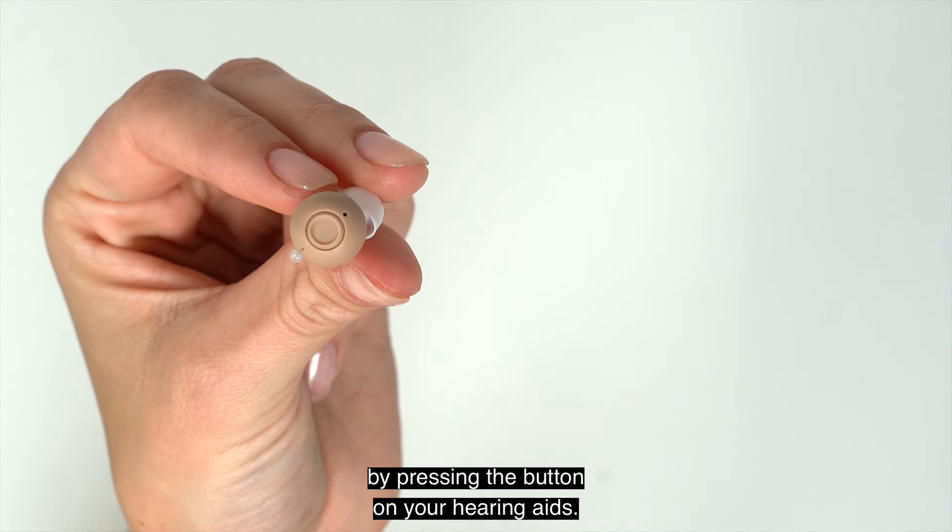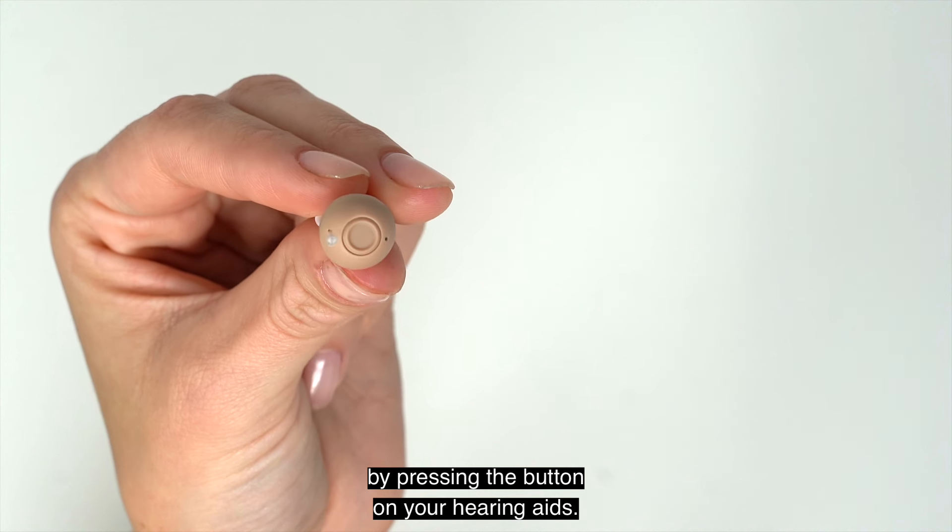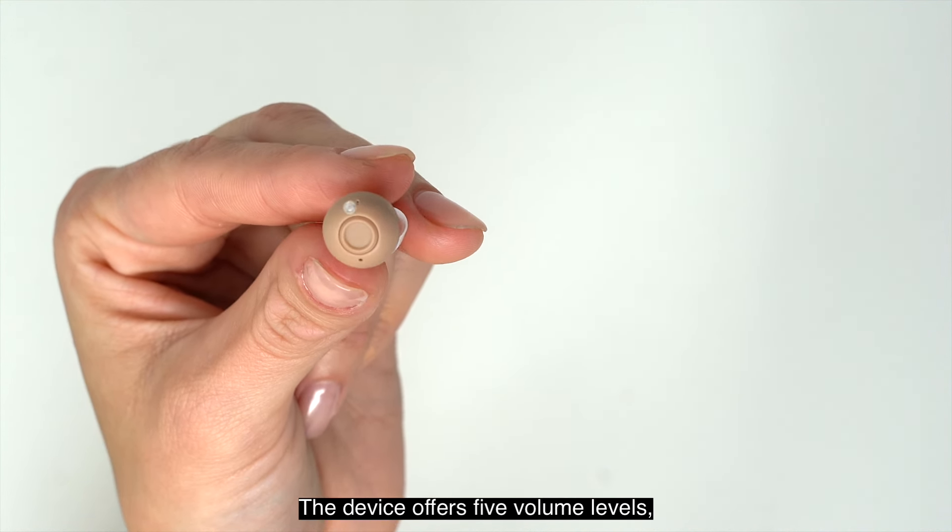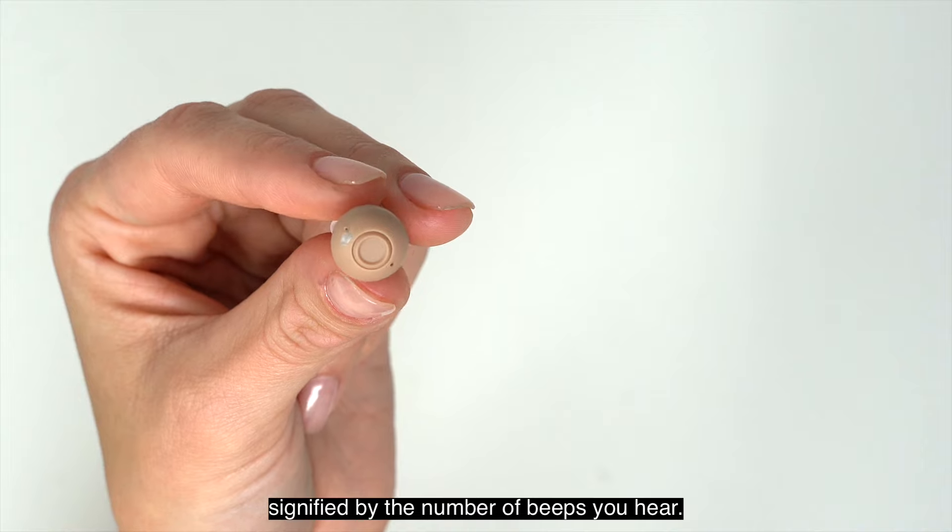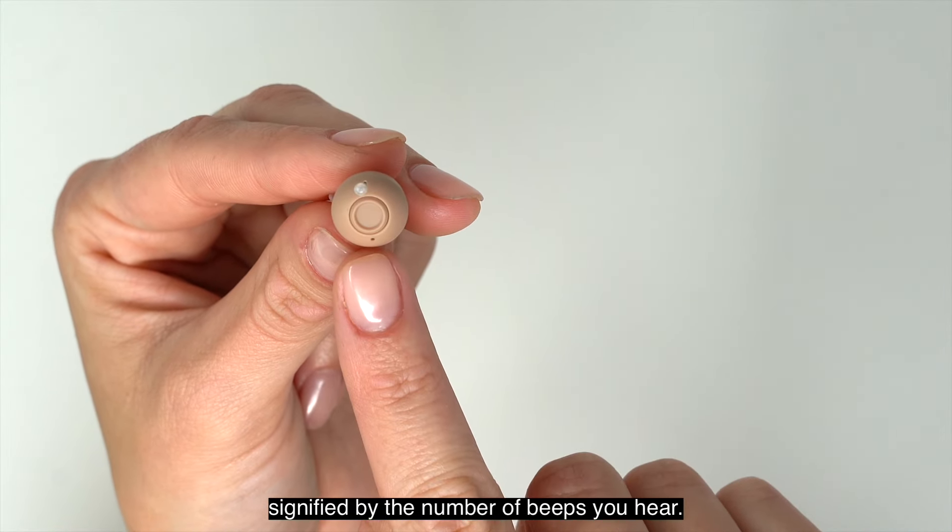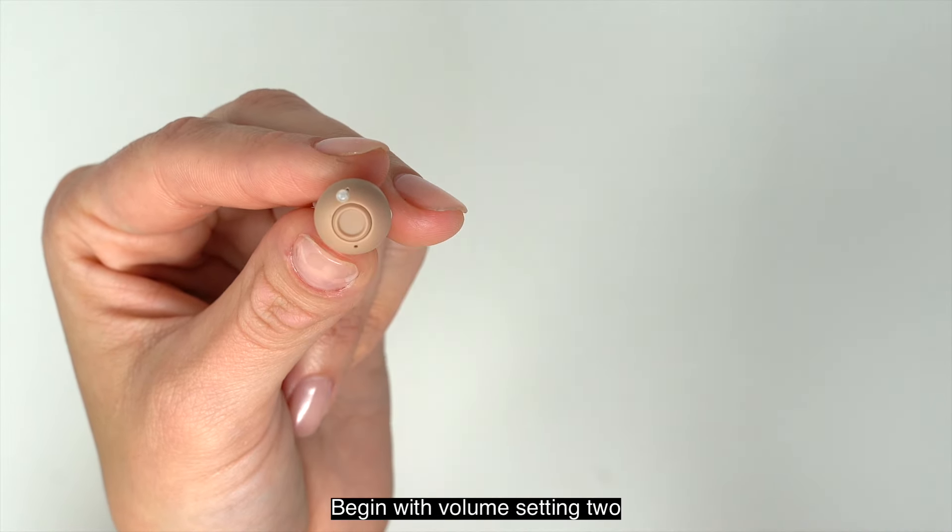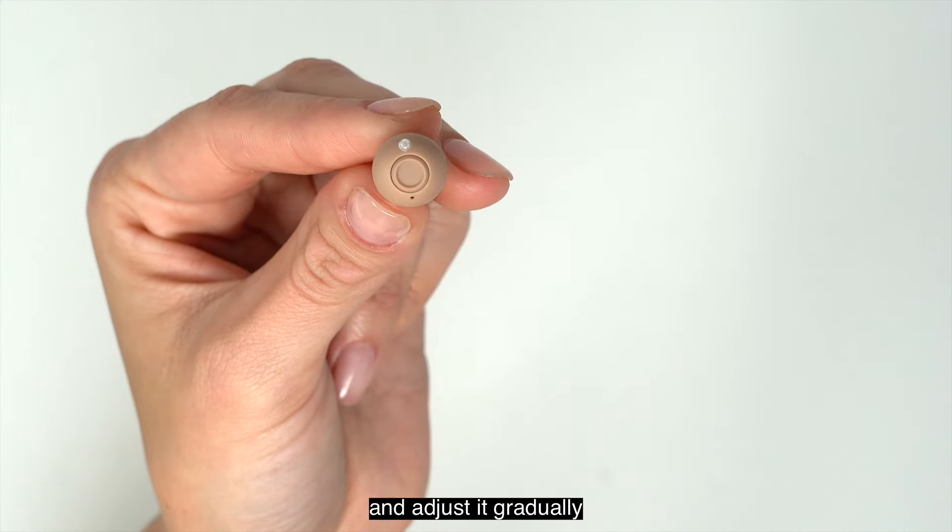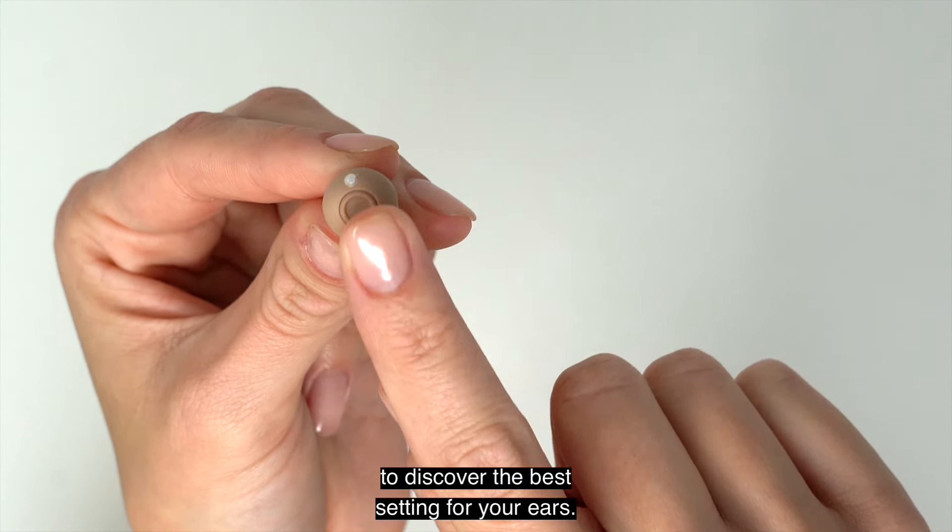The volume can be changed by pressing the button on your hearing aids. The device offers five volume levels signified by the number of beeps you hear. Begin with volume setting 2 and adjust it gradually to discover the best setting for your ears.